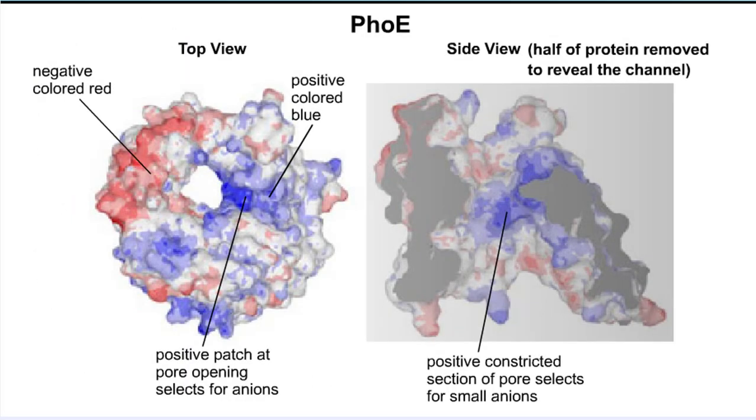Another porin, PhoE, is weakly selective for small anions due to positively charged residues such as lysine that attract anions towards the mouth of the porin.